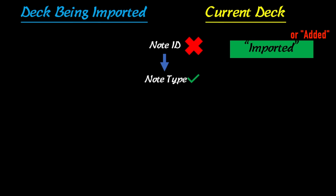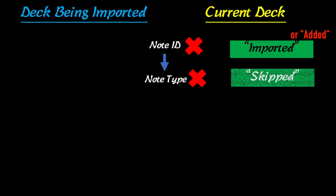Sometimes this happens if people duplicate their cards — it will add a different note ID and then you can't update anymore. If the note type is different, Anki will say that it skipped the cards because the note type was different.